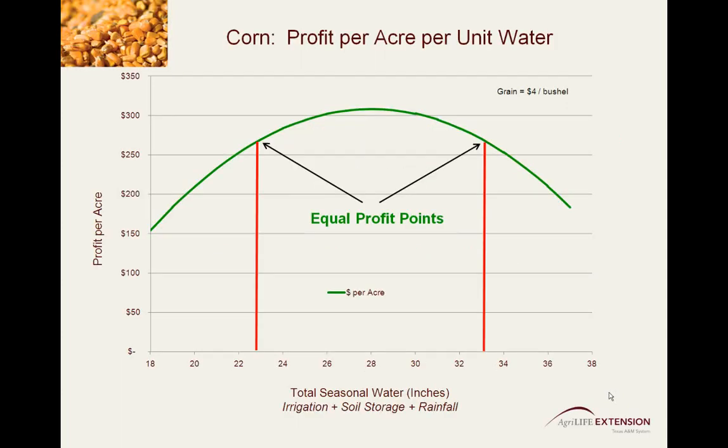The final take-home point on this topic is that there are multiple points on this curve that correspond to the same profit level. This dispels the common thought that an extra inch of water is cheap insurance. In many cases, the extra inch of water applied may not only prove to decrease profit, but may even work to decrease yields. Looking again at the profit per acre per inch of water curve, we see that the same profit level attained targeting maximum yield is feasibly met using 10 inches less irrigation water.